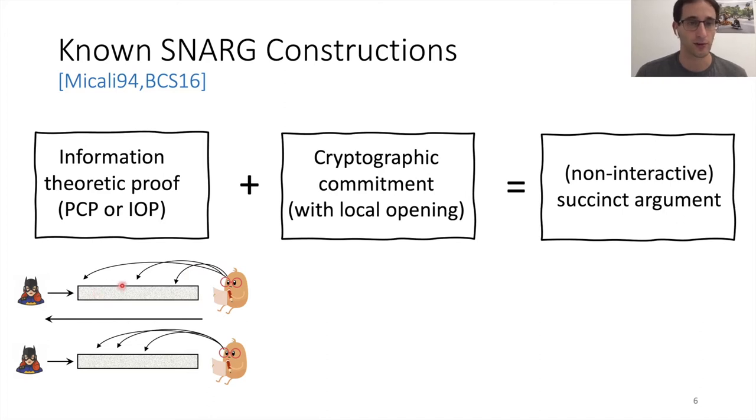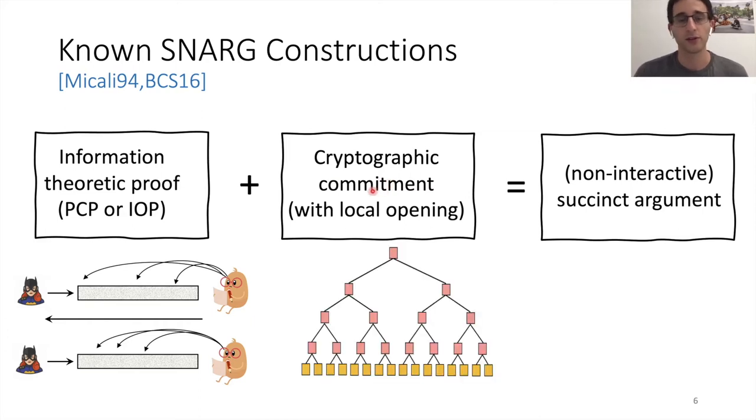An IOP is simply an interactive generalization of PCP. So after this happens, the verifier can send some message back to the prover, the prover sends another message, and again, the verifier only reads a few bits from this. So they take this information theoretic proof. They combine it with a cryptographic commitment scheme that supports local opening. These are usually what's called a Merkle tree, and together they compile this into a non-interactive succinct argument.